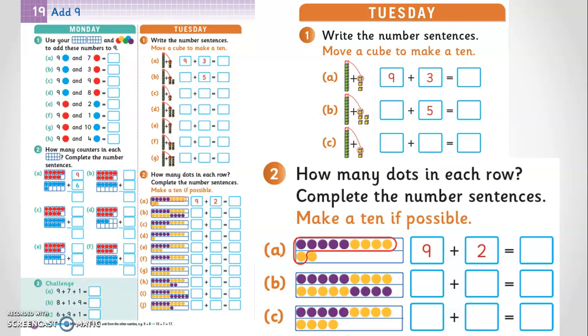The units also progress through a concrete pictorial abstract approach, focusing on a particular strategy. In this case, the child is enabled to recognize that to add nine to any number, you can move one unit to the nine to make a ten, and thus a friendlier or easier calculation.